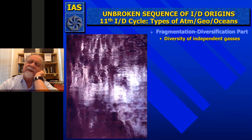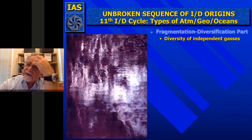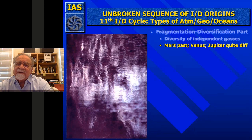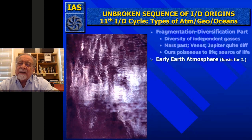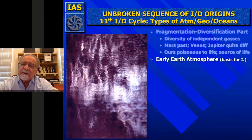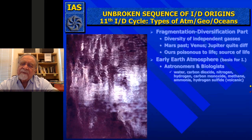Looking for water and DNA on other planets is, I say, ridiculous, because giant planets could use silicon instead of carbon as the basic building block of macromolecular structures, which could lead to life. On our planet, there was a diversity of independent gases. Astronomers say the early Earth atmosphere was water, carbon dioxide, nitrogen, hydrogen, carbon monoxide, methane, ammonia, and hydrogen sulfide from volcanic sources. Chemists and geologists said there was less methane, ammonia, hydrogen sulfide, and more water and carbon dioxide from rocks. But both groups agreed in the early years that there was very low oxygen.